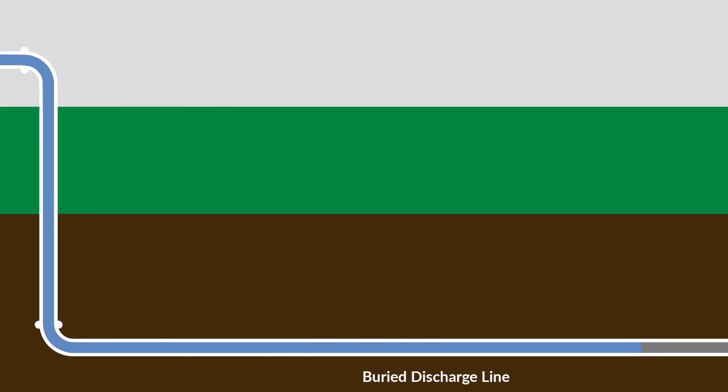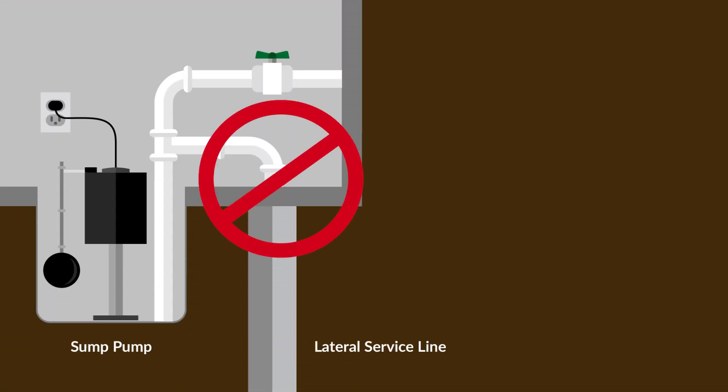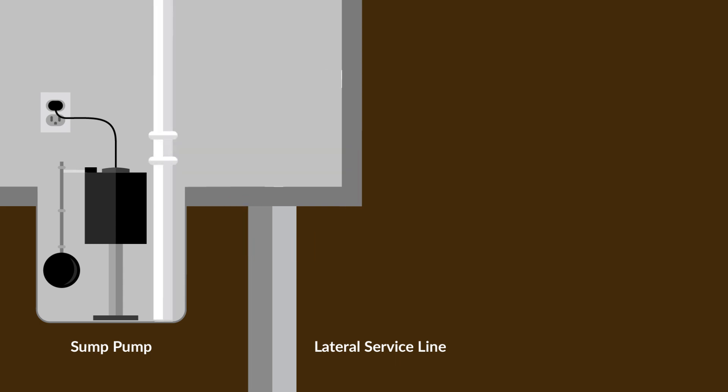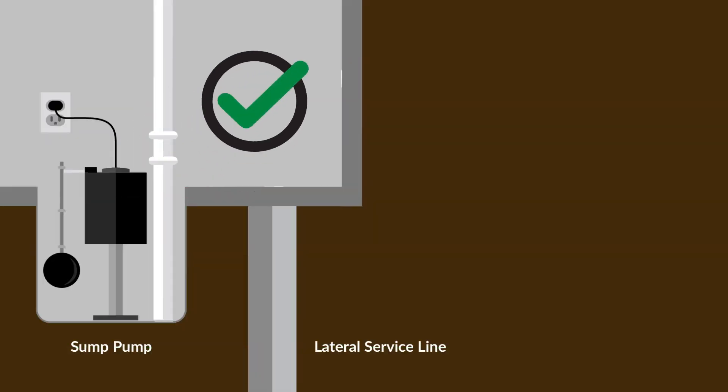If the inspector finds that your sump pump is cross-connected to the sanitary system, they will work with you to correct the issue at no cost. This initial program will cover all costs to bring your connection up to code and properly drain your sump, which would otherwise cost homeowners about $1,500.